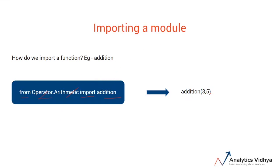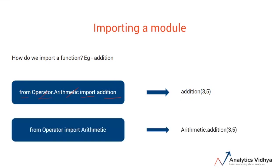The other method to import is by importing the module rather than the specific function. So for example, we can import the arithmetic module from the operator package. Now when we want to use the addition function, I can use a dot operator to access this function which resides inside this module. So addition will be called by arithmetic dot addition supplied by the parameters. So this is how we can import a module in a python function.